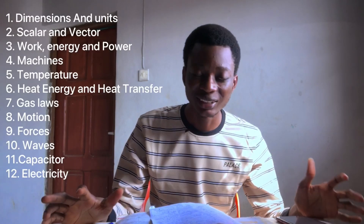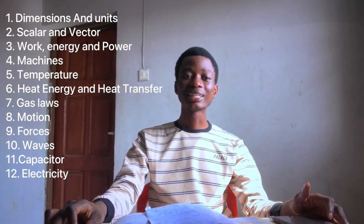The next topic is electricity. There are two kinds: static electricity and current electricity. Static electricity is covered in SS1 physics. For current electricity, know how to calculate potential difference, electromotive force, resistance using Ohm's law, resistance in series and in parallel, and electrical energy. These are very, very important.